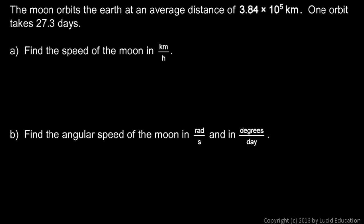In this problem, we're told that the moon orbits the Earth at an average distance of 3.84 times 10 to the 5th kilometers, and one orbit takes 27.3 days.